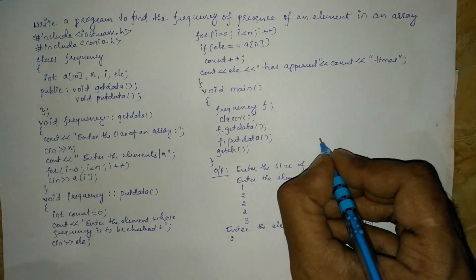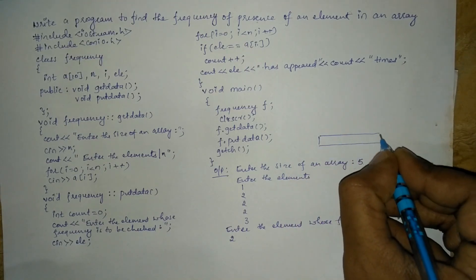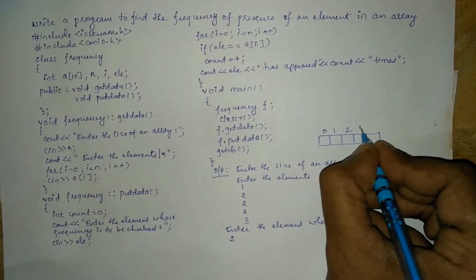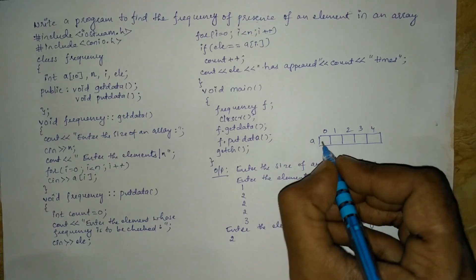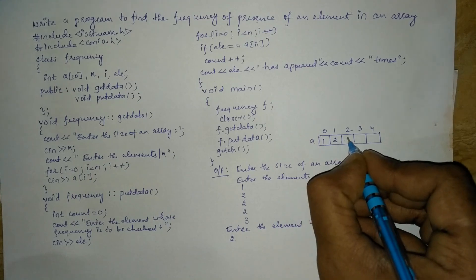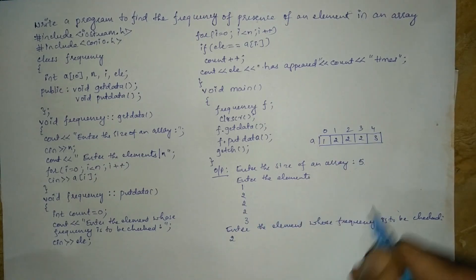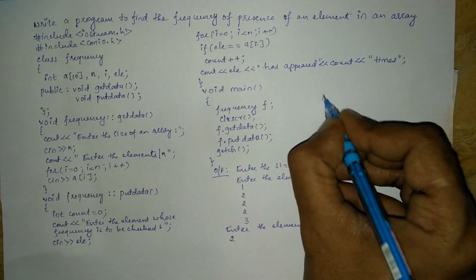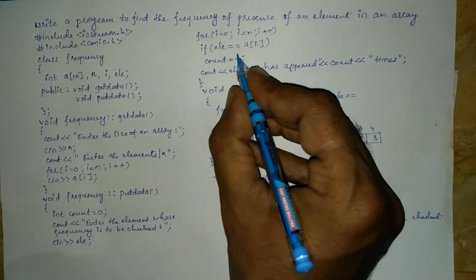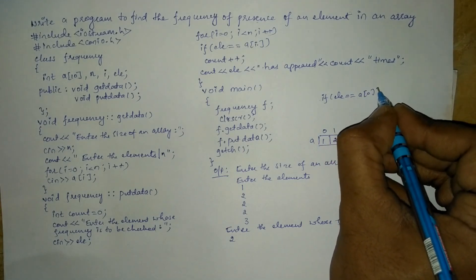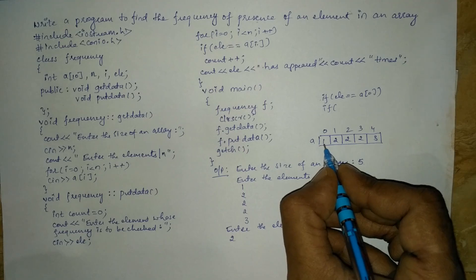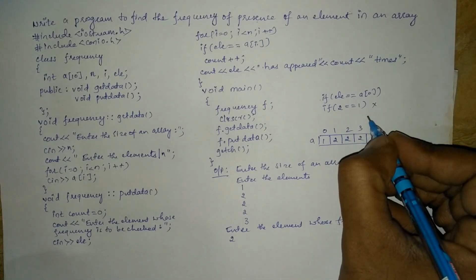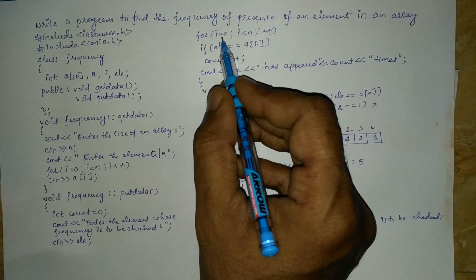A of 0 holds value 1. The array is mapped in memory as positions 0, 1, 2, 3, 4 holding values 1, 2, 2, 2, 3 respectively. So element is 2, and a of 0 is 1. Is 2 equal to 1? No, condition is false. Control transfers back to the for loop incrementing i by 1. Now i is 1, which is less than 5, so condition is true. We check again: is element 2 equal to a of 1? A of 1 is 2. Yes, it is true, so the counter increments by 1. Now count equals 1.